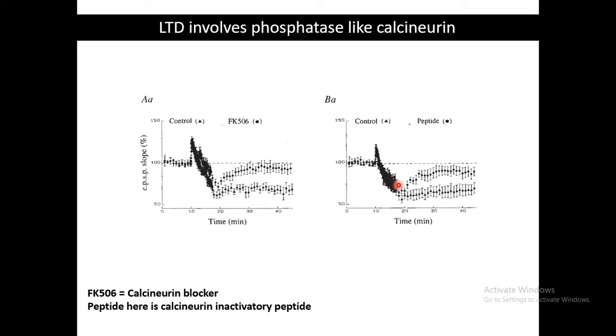When calcineurin is blocked, the long-term depression is gone. Both by pharmacological blockade of calcineurin or by blockade with a calcineurin inhibitory peptide, the synaptic depression response recorded over time is gone, meaning calcineurin is very important for synaptic depression.